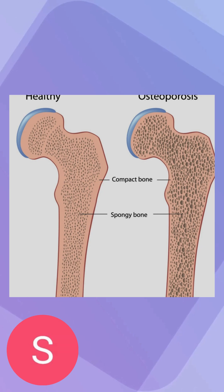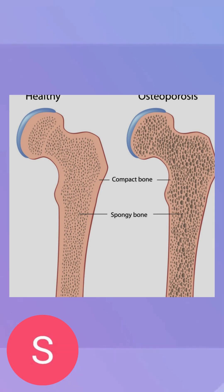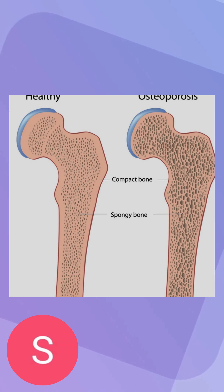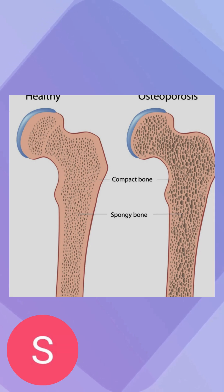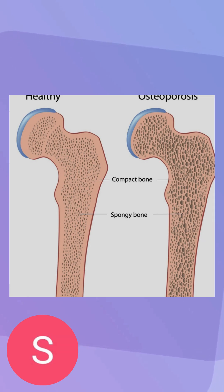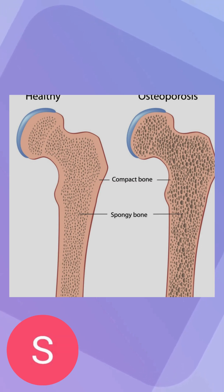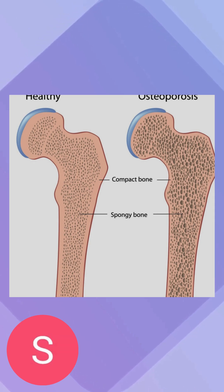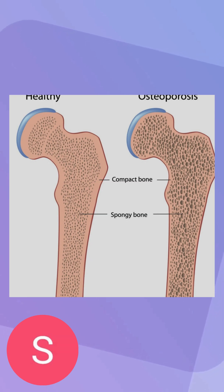It goes from being a compact bone to more of a spongy bone, which means you can't handle the same stress when somebody falls or during day-to-day tasks. It's mainly found in people's spines, legs, and around the waist area. Elderly patients are especially prone because they can pretty easily get bone fractures because of this condition.